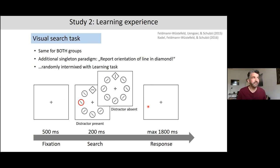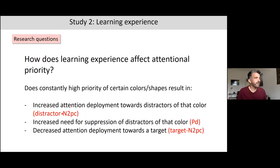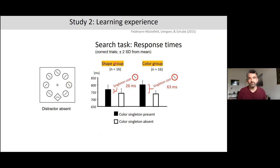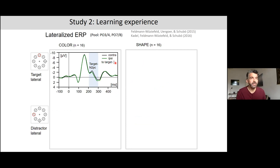The visual search task was identical for both groups — same instructions, same physical appearance. There were distractor-present and distractor-absent trials; in distractor-present trials there was a red additional singleton. Again we measured the distractor N2PC, the PD, and the target N2PC. The behavioral results showed that the singleton cost — longer response times when the distractor was present — was more pronounced for the color group than for the shape group.